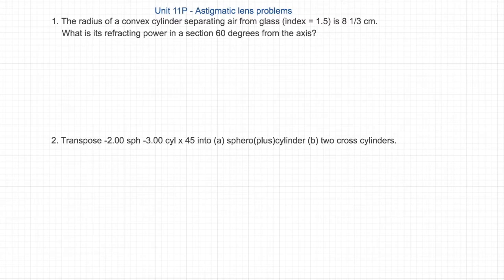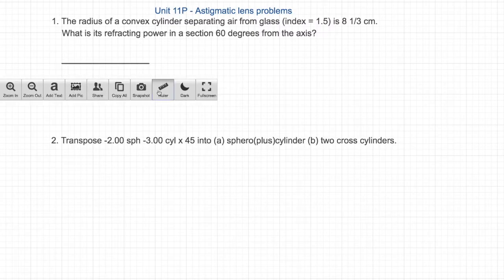Question 1: The radius of a convex cylinder separating air from glass, index equals 1.5, is 8 and one-third centimeters. What is its refracting power in a section 60 degrees from the axis?